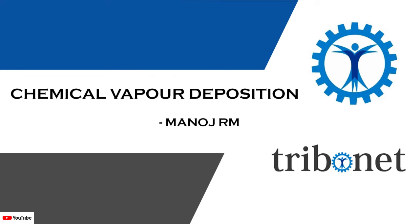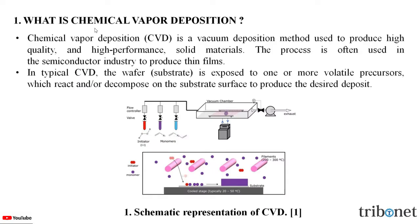Hello everyone, welcome to the YouTube channel of Tribonet. My name is Manoj. Today, let us understand about chemical vapor deposition. Chemical vapor deposition, or CVD, is a vacuum deposition method used to produce high quality and high performance solid materials.